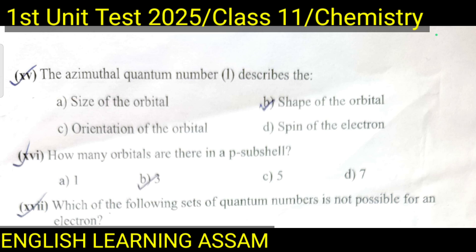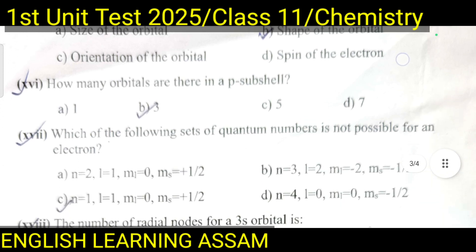Question number sixteen: How many orbitals are there in a p subshell? A. 1, B. 3, C. 5, D. 7. The correct option is B — 3.